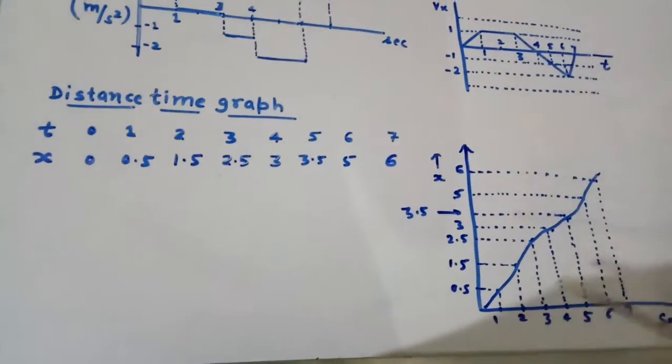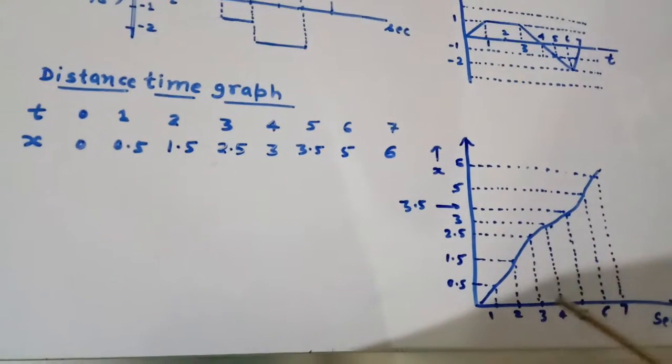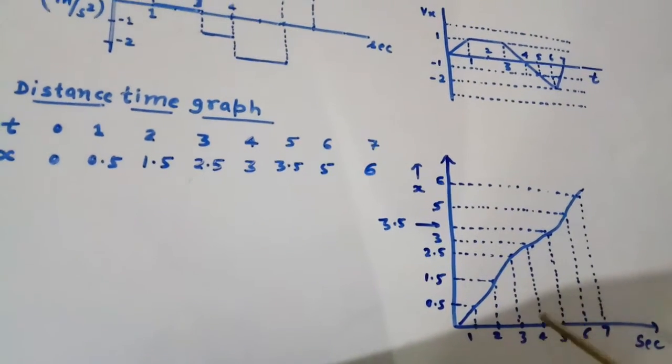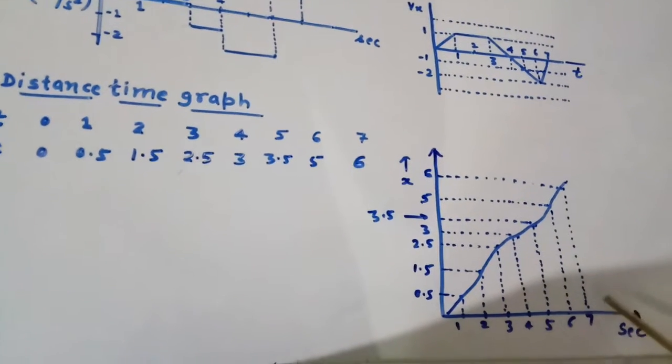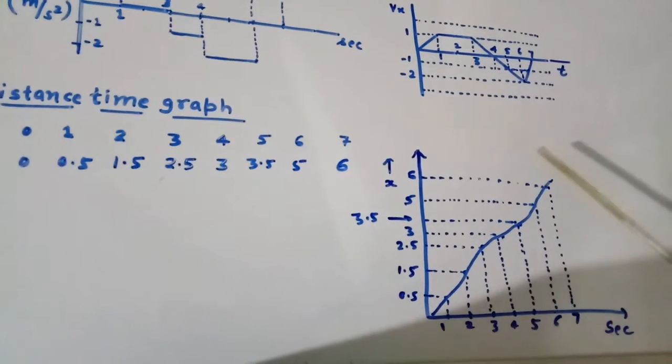Here corresponding graph is given corresponding to 1 second, distance 0.5. Then corresponding to 2 second, distance is 1.5. Then corresponding to 3 second, distance would be 2.5. Corresponding to 7 second, distance at 6. This would be the graph, which is your answer. Thank you.